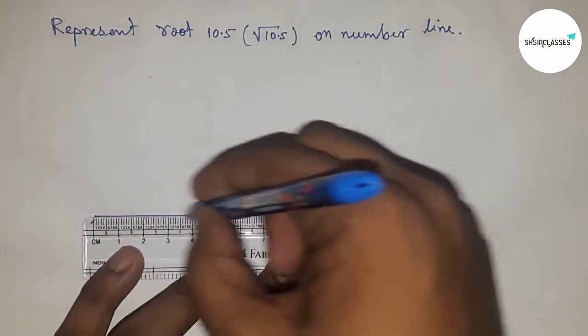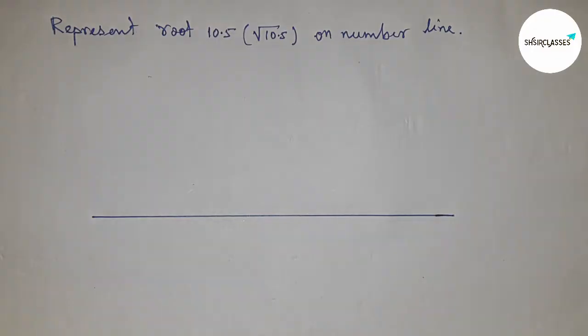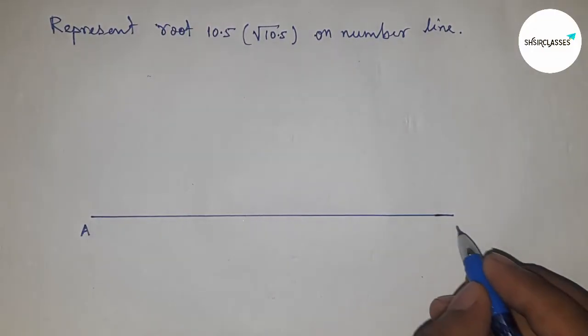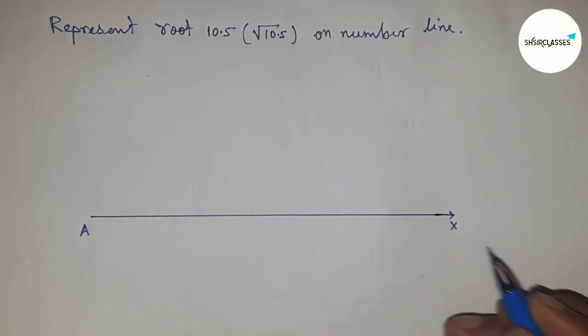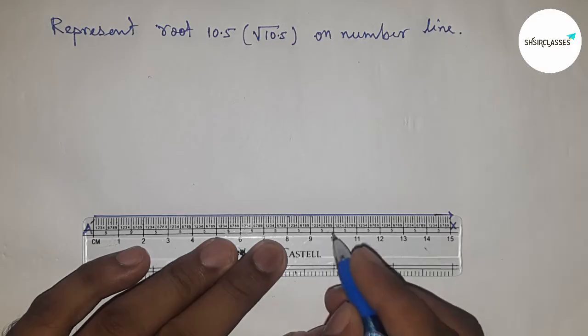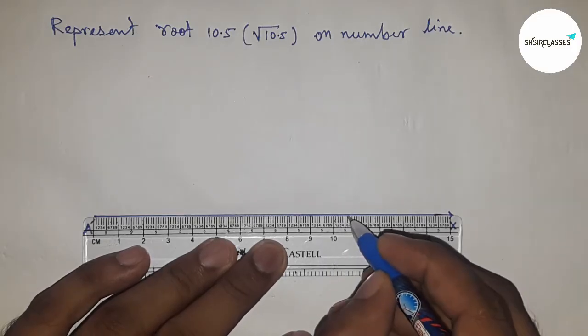First of all, draw a line of any length. This is point A and this is X, so this is an AX line. Next, take a length of 10.5 centimeters.